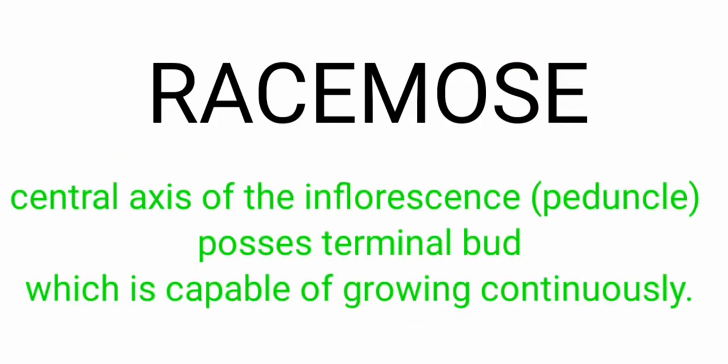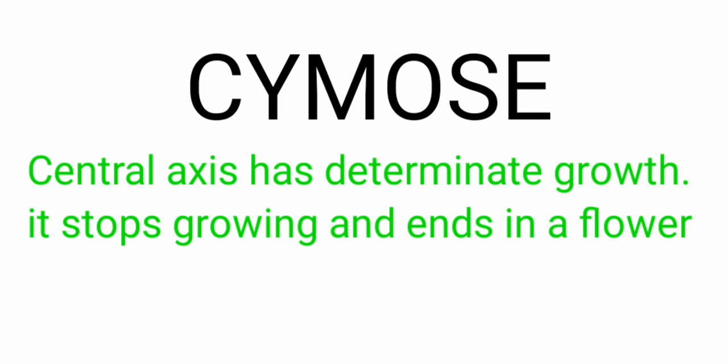Racimos, as mentioned in the previous session, has the capability of growing continuously. Particularly, the central axis or peduncle of the inflorescence has the capability to grow continuously. In the case of cymos, which is opposite to the racimos pattern, the central axis or peduncle of the flower stops growing at a particular stage and produces the flower.